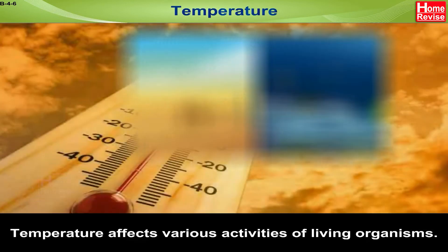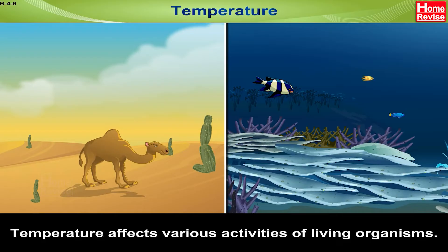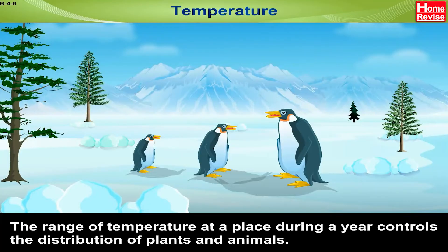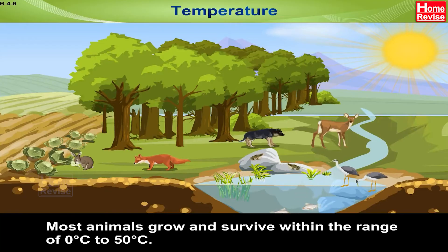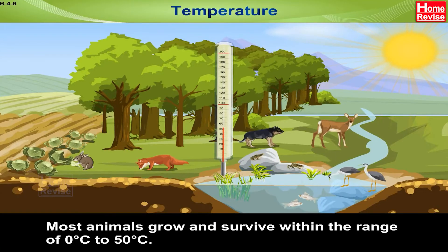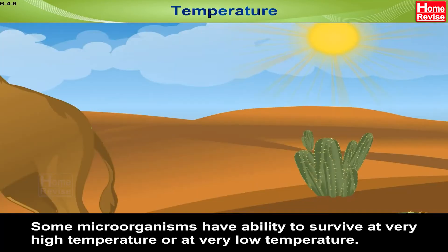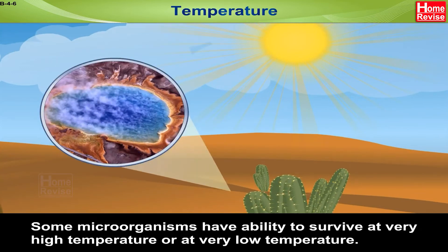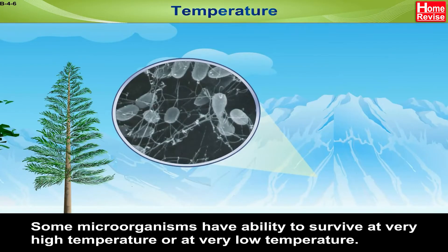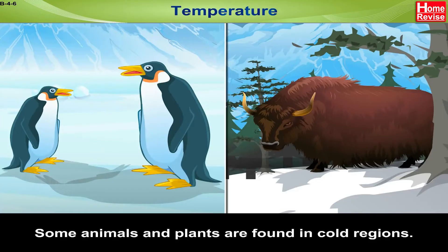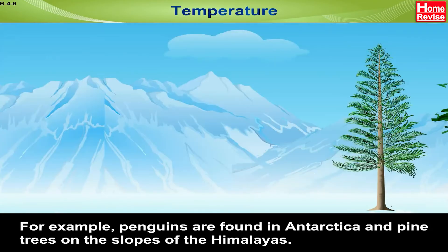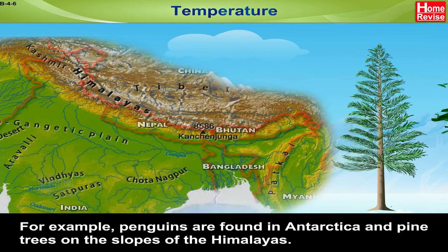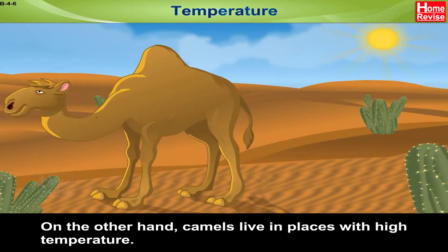Abiotic component — Temperature: Temperature affects various activities of living organisms. The range of temperature at a place during a year controls the distribution of plants and animals. Most animals grow and survive within the range of 0°C to 50°C. Some microorganisms can survive at very high or very low temperatures. Some animals and plants are found in cold regions — for example, penguins in Antarctica and pine trees on the slopes of the Himalayas. On the other hand, camels live in places with high temperature.